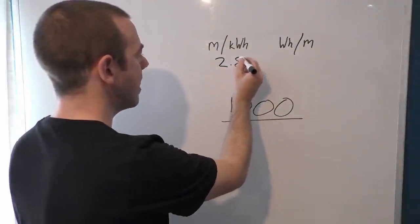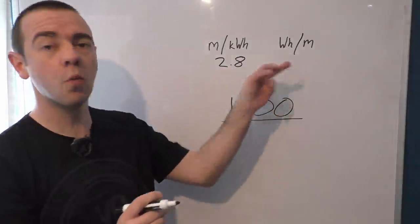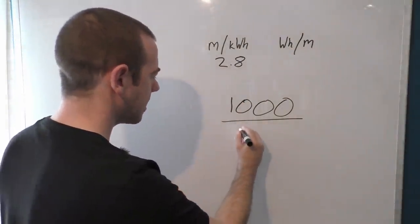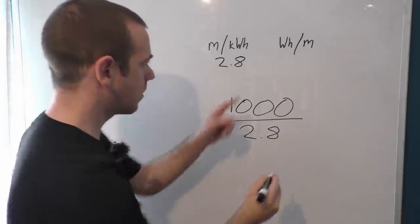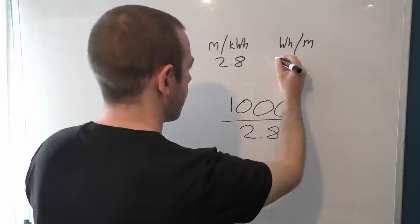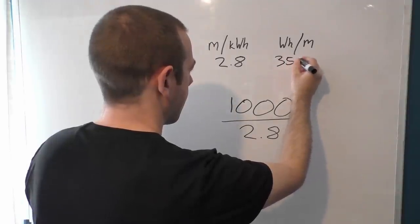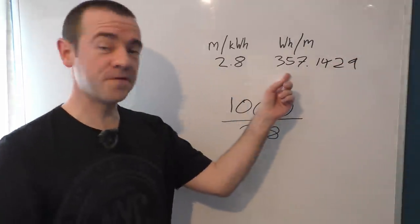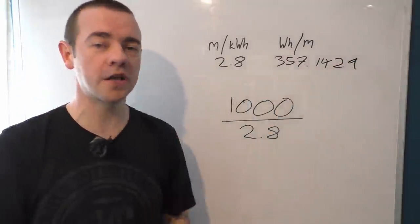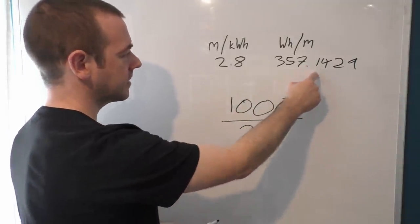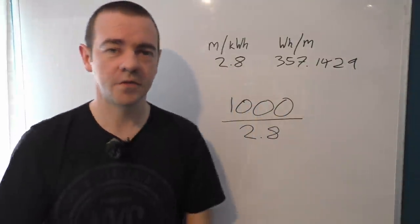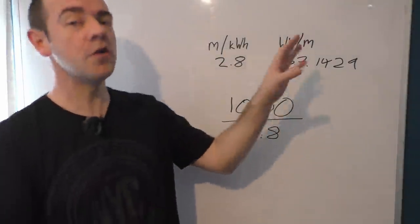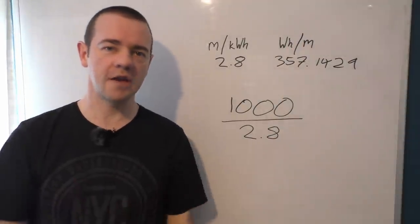What is 2.8 miles per kilowatt hour in watt hours per mile? Quite straightforward. 1000 divided by 2.8 equals 357.1429. There we go. 357.1429 watt hours per mile. So if we did 1000 divided by that, it would equal that. So all you have to remember is 1000 divided by that number gives you the other number. Literally as straightforward as that.